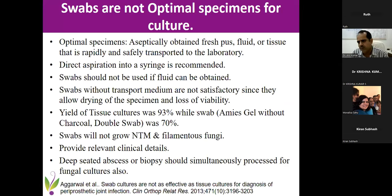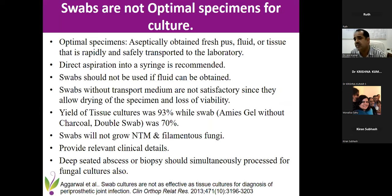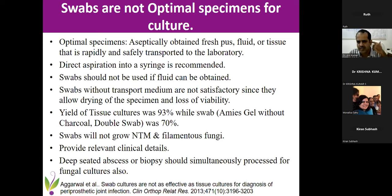For pus and tissue cultures: we've seen surgeons drain liters of pus and then take a small swab to send for culture — that is a very bad method. I request all clinicians to send aspirate, fluid, or tissue. Aspirate with a needle and syringe — even 0.5 ml is fine. A swab is the least preferred sample. If you can't get anything else, send multiple swabs so they are completely wet with pus, and send them to us as soon as possible so they don't dry out. Tissue culture yield is 93% compared to 70% for swabs with transport media.